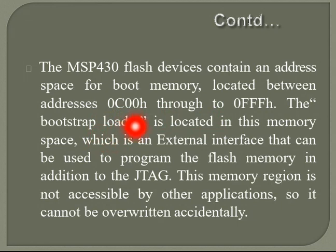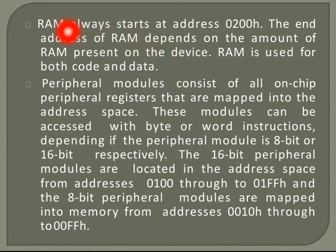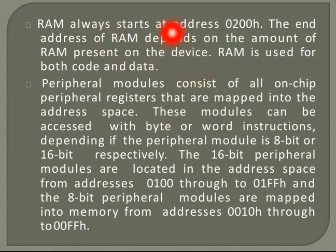MSP430 flash devices contain an address for bootstrap memory, located between 0C00h and 0FFFFh. The bootstrap loader resides in this memory space and provides an external interface that can be used to program the flash memory in addition to JTAG. This memory is not accessible by other applications, so it cannot be accidentally overwritten. RAM always starts from address 0200h, and its end address depends on how much RAM is present on the device. RAM is used for both code and data.